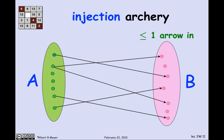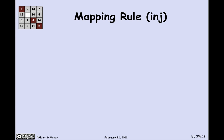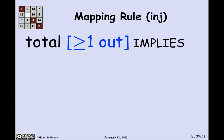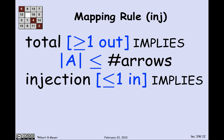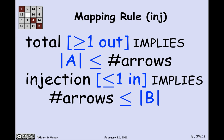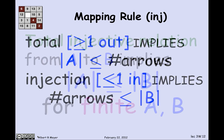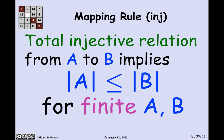The same argument applies for injections. With a total injection, there is at least one arrow out of every element of A, so |A| ≤ the number of arrows. With an injection, at most one arrow comes into each element of B, so the number of arrows ≤ |B|. Combining these two inequalities, a total injective relation from A to B implies |A| ≤ |B| for finite A and B. Whenever there is a total injective relation, there is also a total injective function — that's left as a class exercise.